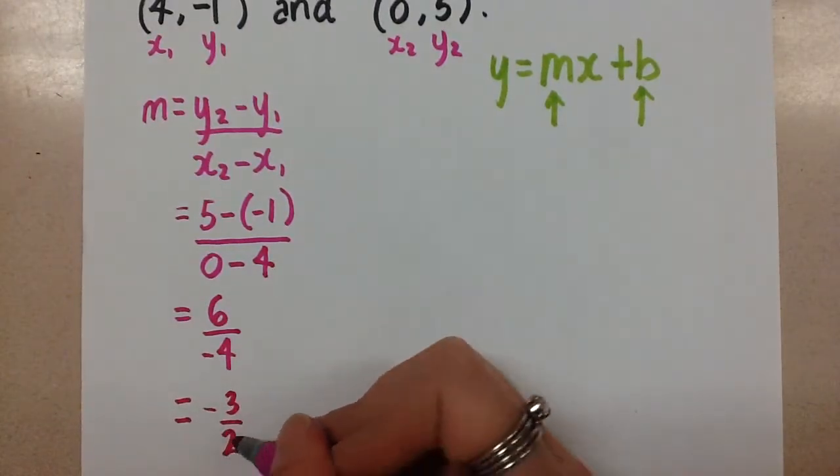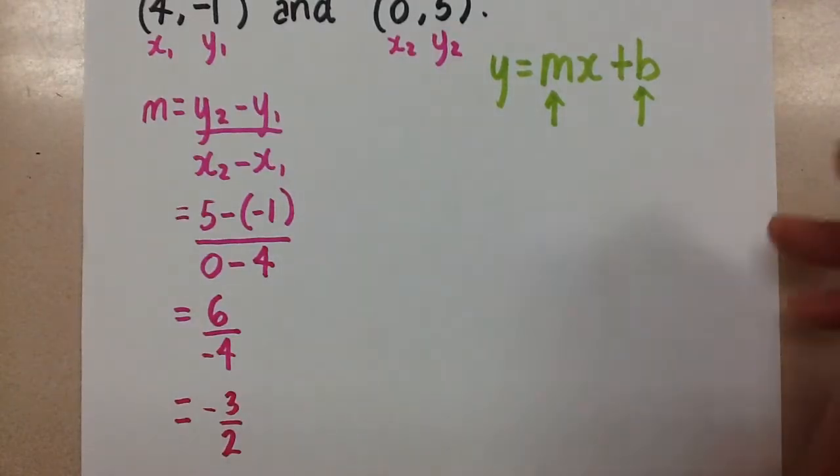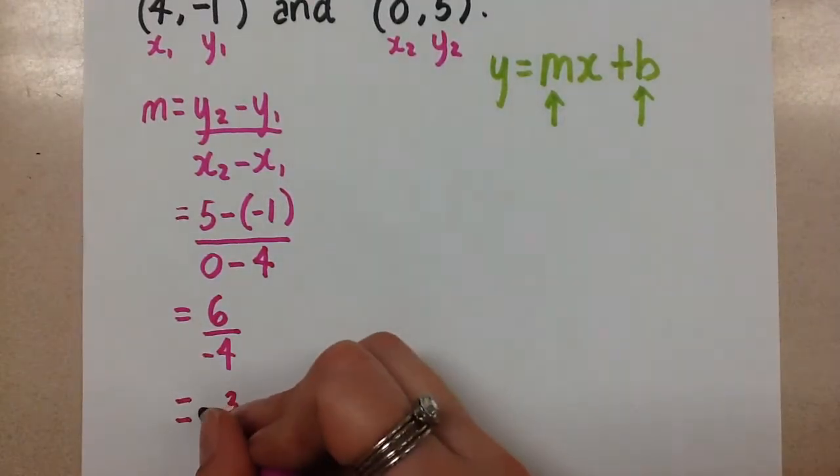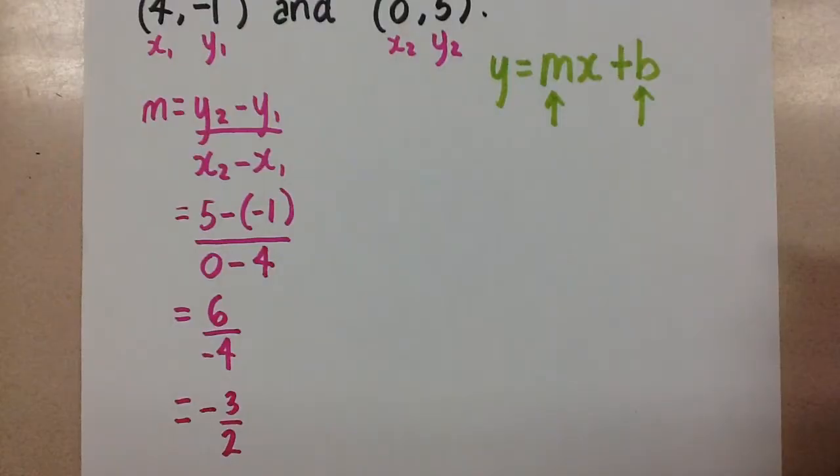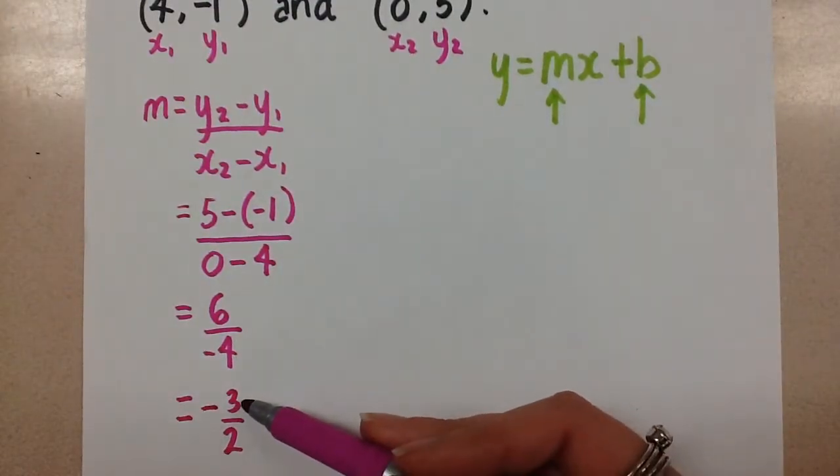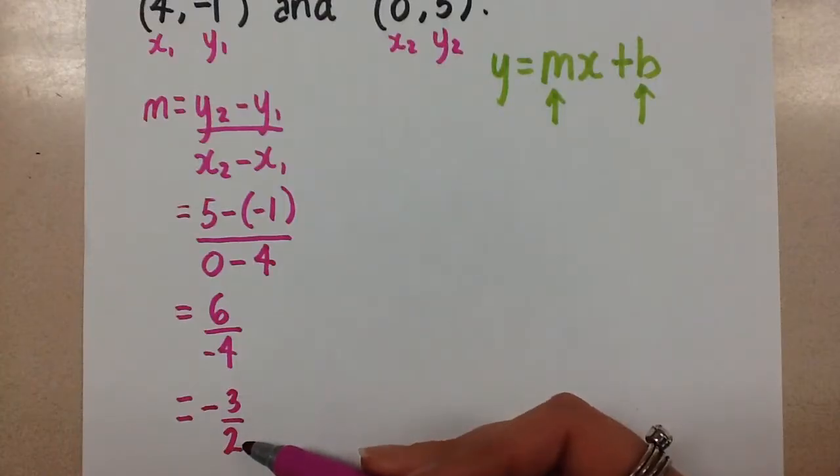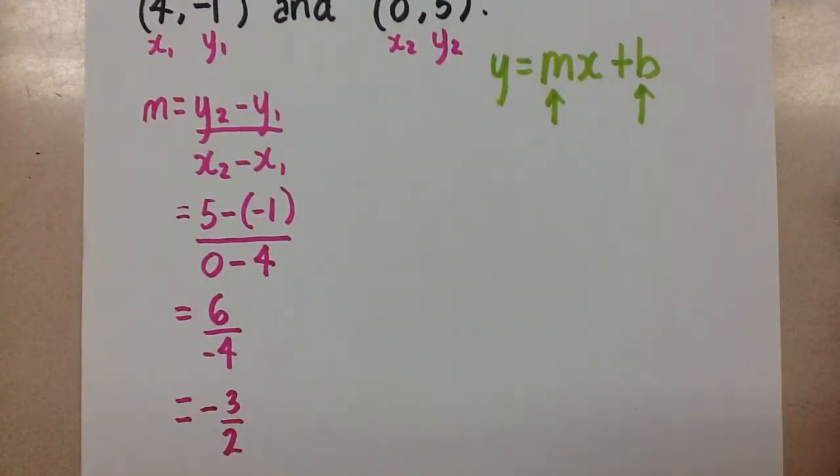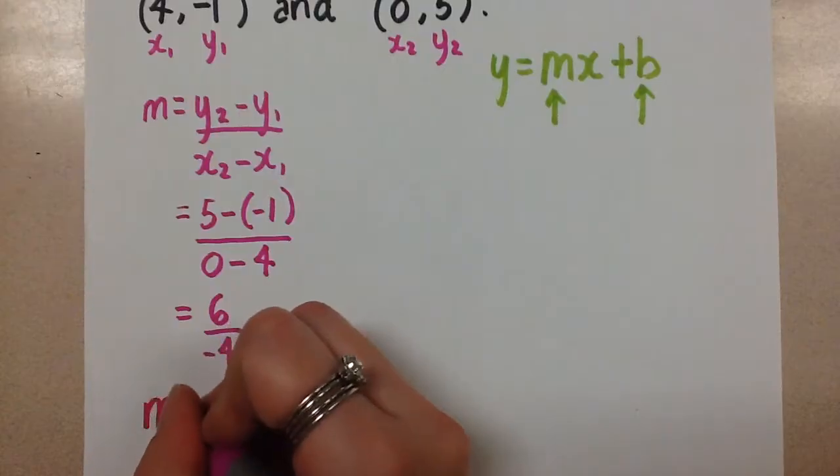You can use a decimal if you prefer. That would be negative 1.5. That's up to you, but we always prefer the reduced fractions, especially when we're talking about slope, because then if we wanted to graph this, we have the rise and the run clearly indicated in that fraction. So there's our slope.